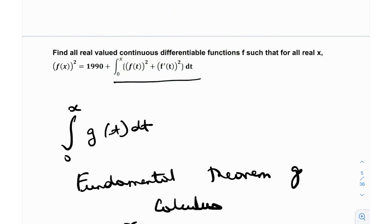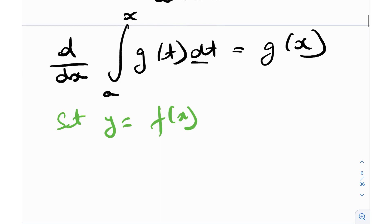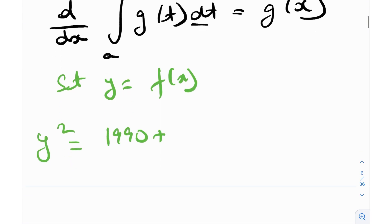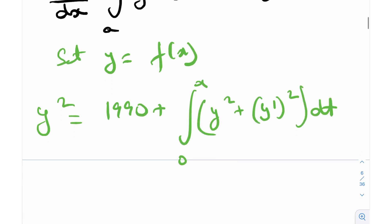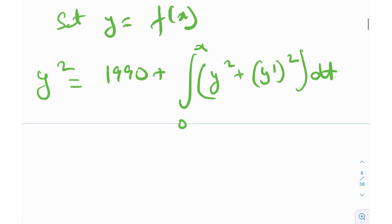So maybe if I set y equals f(x), I can actually reduce this question down to y² = 1990 + integral from 0 to x of (y² + (y')²)dt. Just to make writing it a little bit simpler.